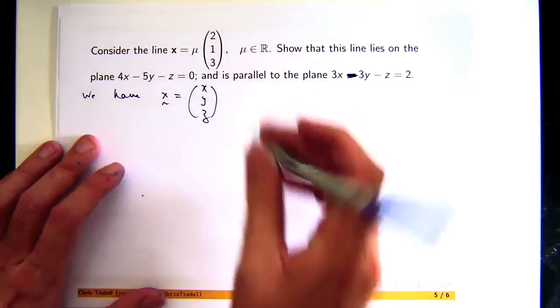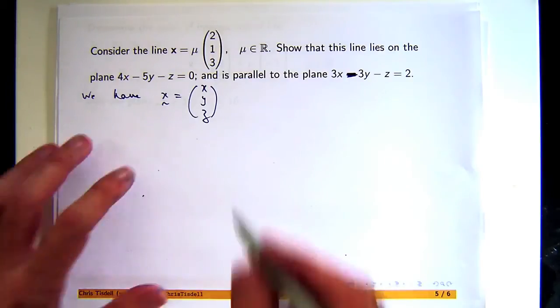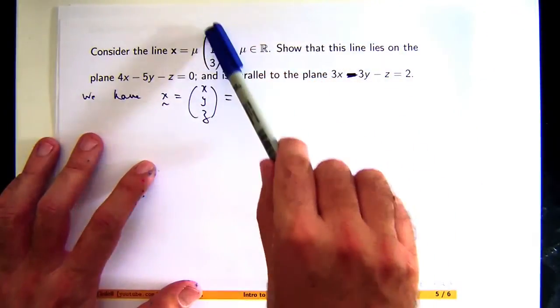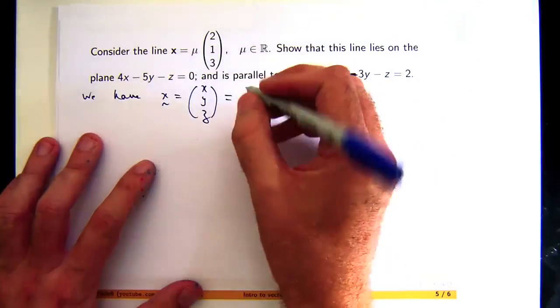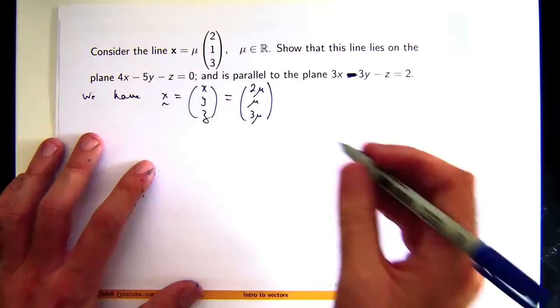In three-dimensional space, this vector here is like a position vector. It has components or coordinates x, y, and z. So if I write this out with this mu distributed into the vector, I have this.